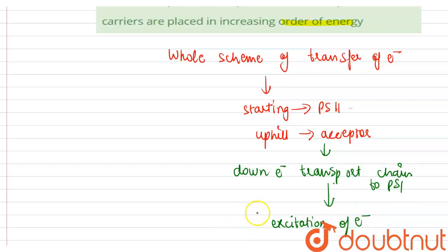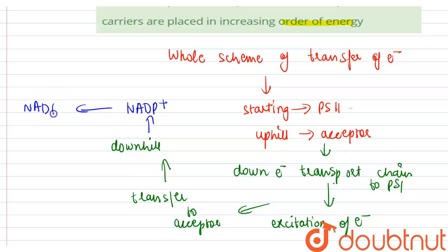then transfer to another receptor and finally downhill to the NADP positive causing it to be reduced to NADPH plus hydrogen ion.